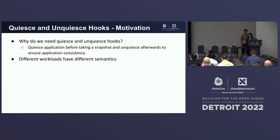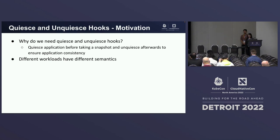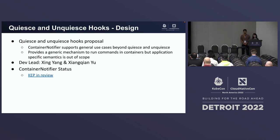Next are quiesce and unquiesce hooks. We need these to ensure application consistency — to quiesce the application before taking a snapshot and unquiesce it afterwards. Different applications have different semantics for quiesce and unquiesce, so we want to design something generic while keeping application-specific logic out of scope. We have a KEP called Container Notifier that proposes a pod spec definition for running commands inside a container. This use case is general and not limited to just quiesce and unquiesce. The KEP is still being reviewed. Xiang Qian and Xin are leading this effort.